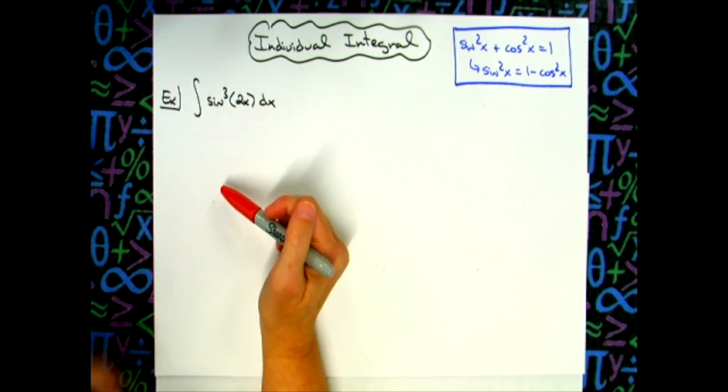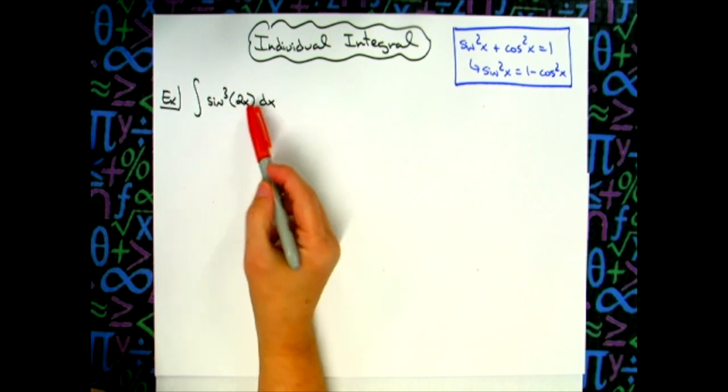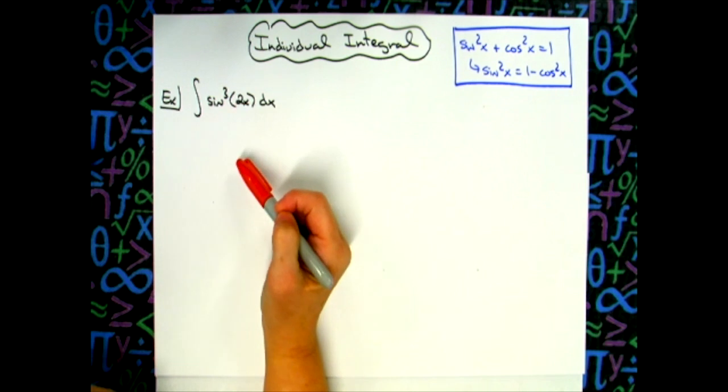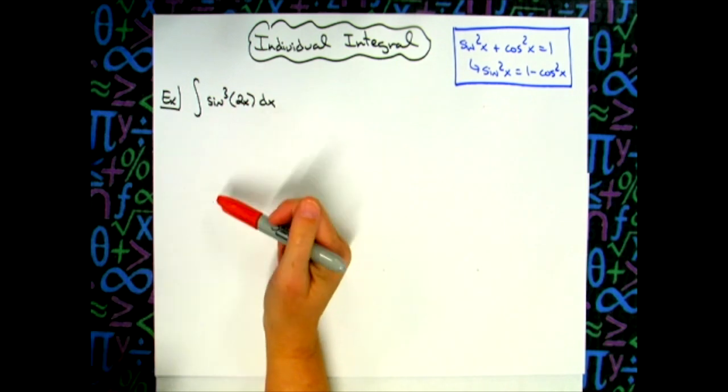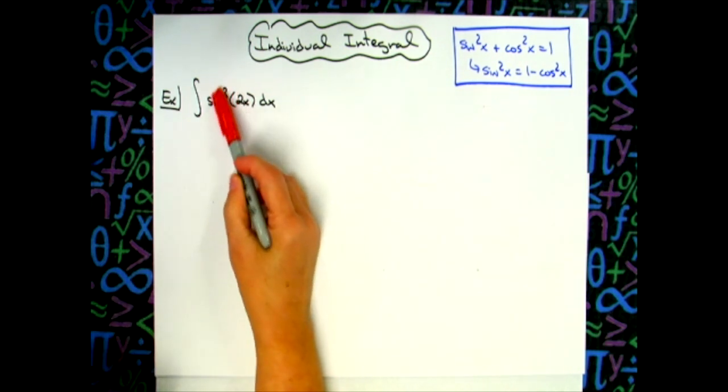Now there's a couple different things that we're going to have to deal with here. We definitely have to get rid of that 2x in there so that we can integrate. And then we also don't need this sine to the third power.